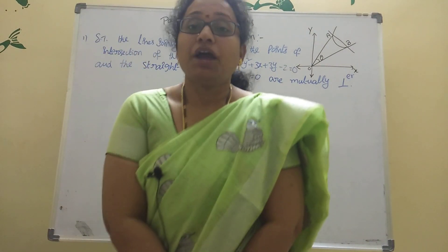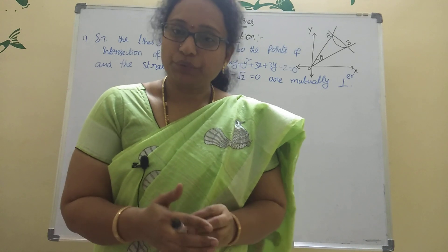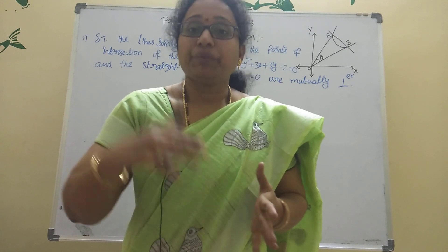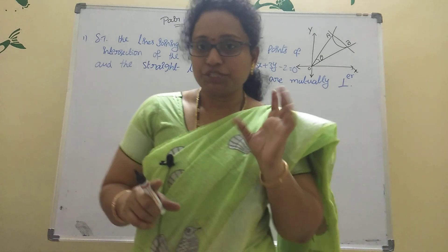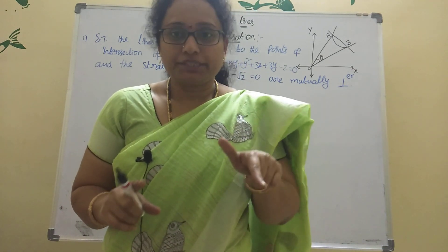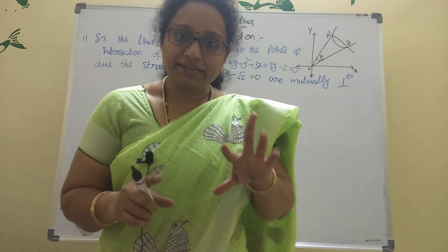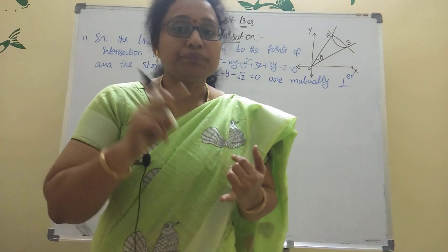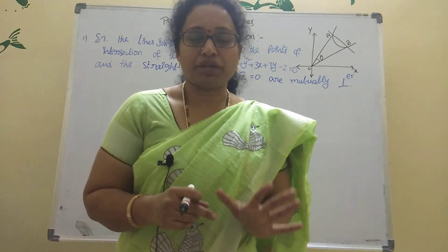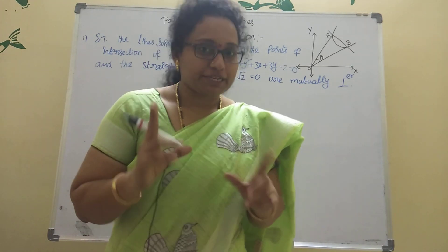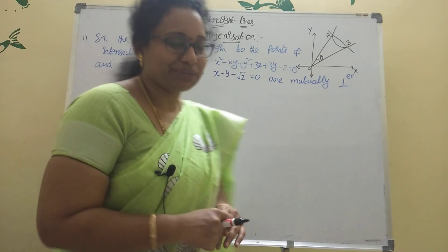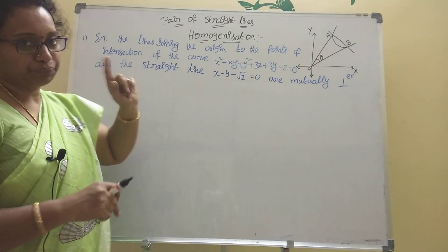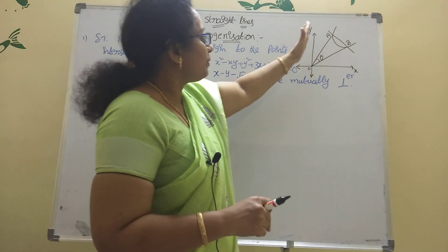Hi, welcome to my channel. Today I am explaining the homogenizing first theorem. I already posted the pair of straight lines theorems. In that pair of straight lines chapter, there are five bits. One problem is the homogenizing problem. Now I have to explain how to do that homogenizing problem. Here, listen: show that the line joining the origin to the points of intersection of the curve.